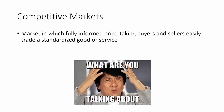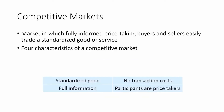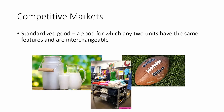What is a competitive market? A competitive market is a market in which fully informed, price-taking buyers and sellers easily trade a standardized good or service. There are actually four components here: we must have standardized goods, no transaction costs, full information, and participants need to be price takers. Let's look at each of those four things that make up a competitive market.